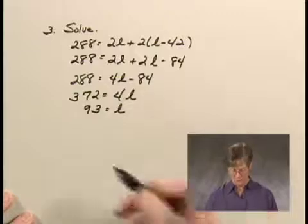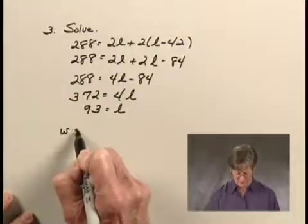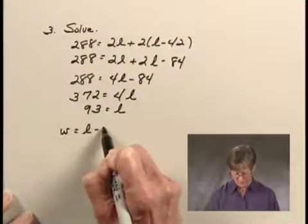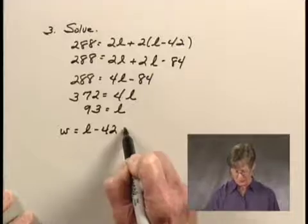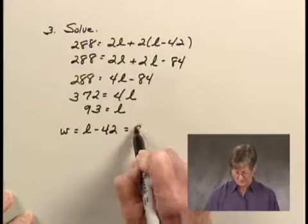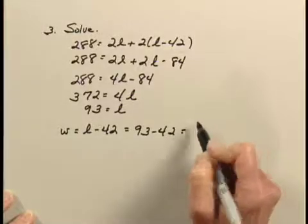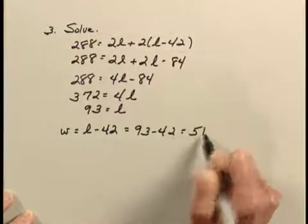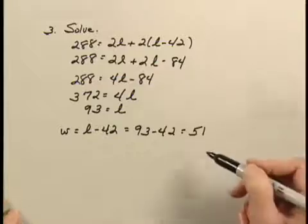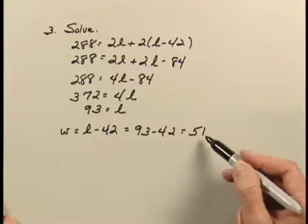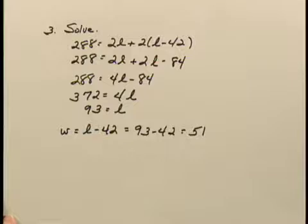Now I also need to find the width. Remember our first equation said that the width was equal to the length minus 42. So if I substitute 93 for L, I can find W by subtracting 42, and I get that W equals 51. So our possible solution is that the width is 51 feet and the length is 93 feet.